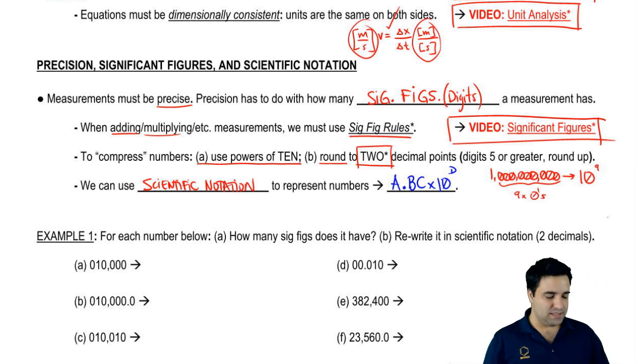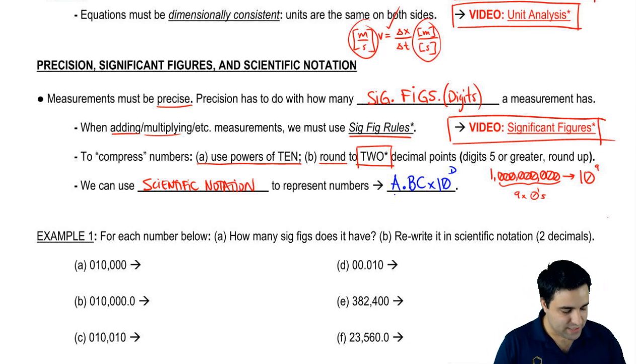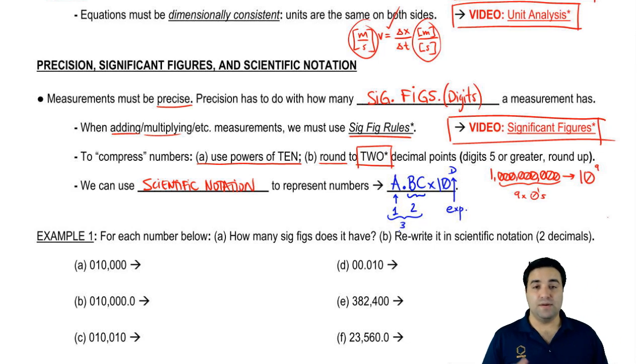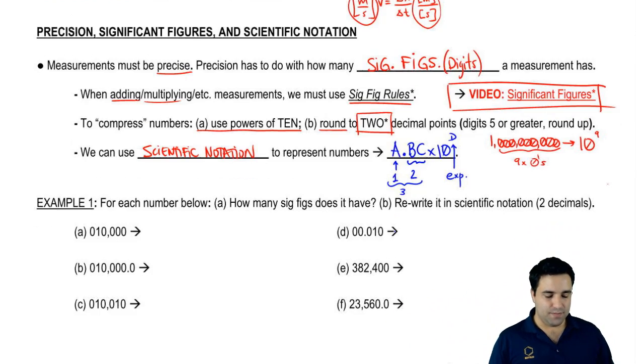It's going to take the following form: A.BC times 10 to the D. That's the format for scientific notation. So the idea is that before the dot, you want only one number, one digit. After the dot, you want as many as two digits, two decimals. And then D over here is your exponent. If you have a number that has four, five, six digits, then you're going to have to truncate it down by compressing, by rounding. And remember that when you round, if the digit is five or greater, you round up. If it's four or less, you round down, obviously.